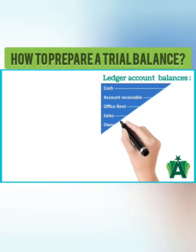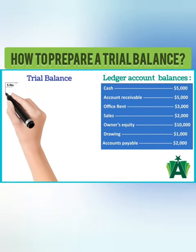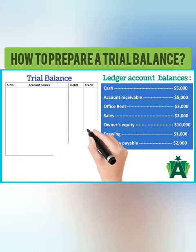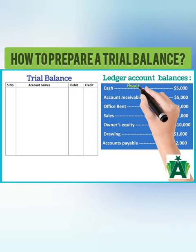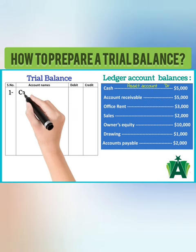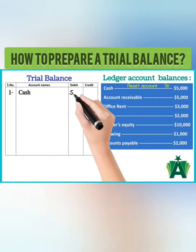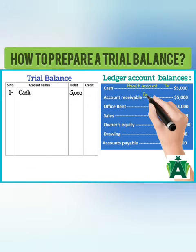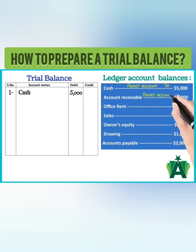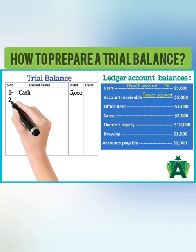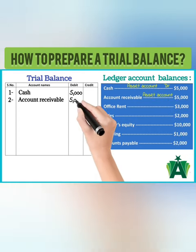From the following ledger account balances, prepare a trial balance. Cash is an asset account; it is recorded in the debit column of a trial balance. Accounts receivable is also an asset account; it is recorded in the debit column of a trial balance.